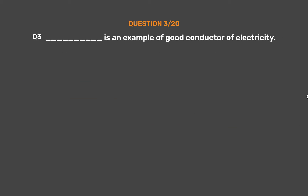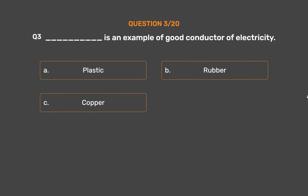Question No. 3: Underscore is an example of a good conductor of electricity. Option A: Plastic. Option B: Rubber. Option C: Copper. Option D: Wood.